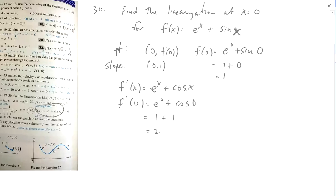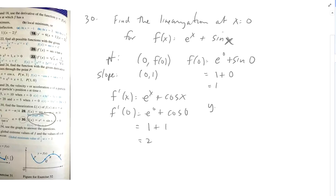So my tangent line then is y minus 1 equals 2 times (x minus 0). So y equals 2x plus 1.